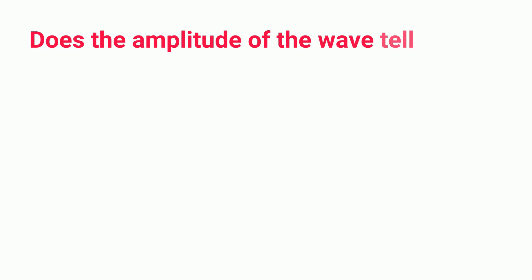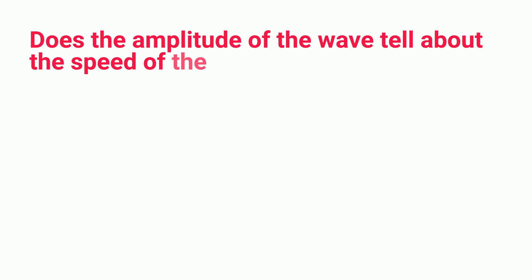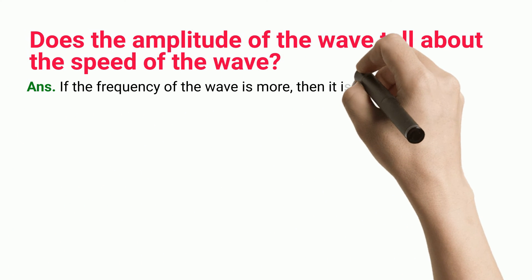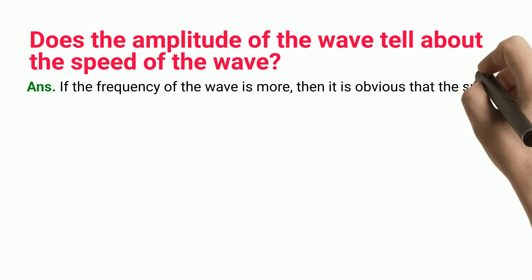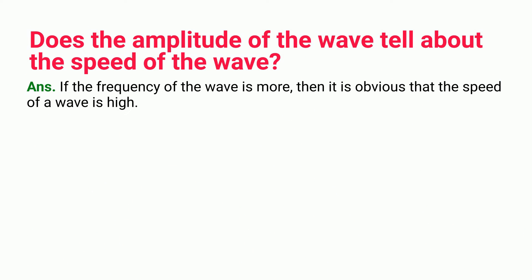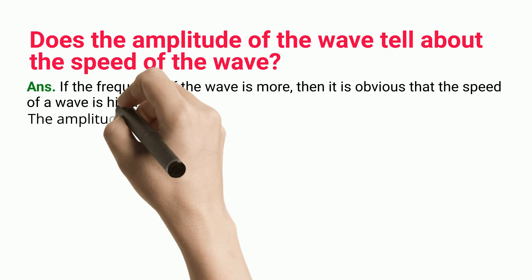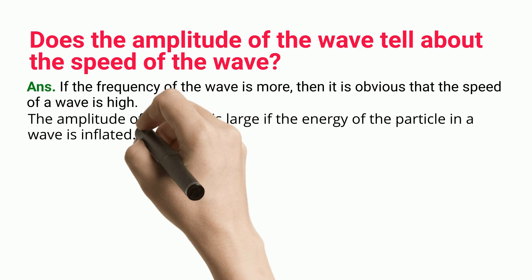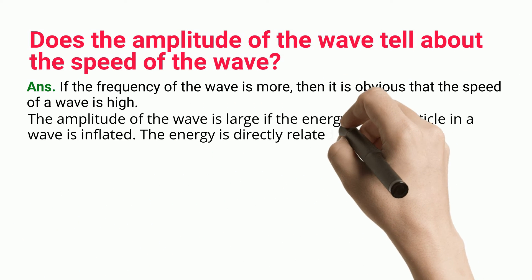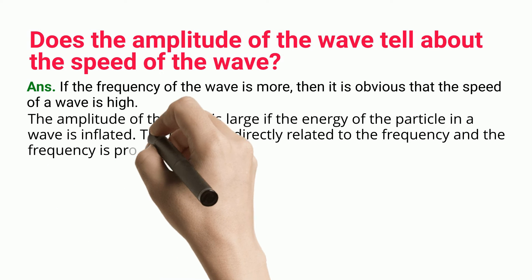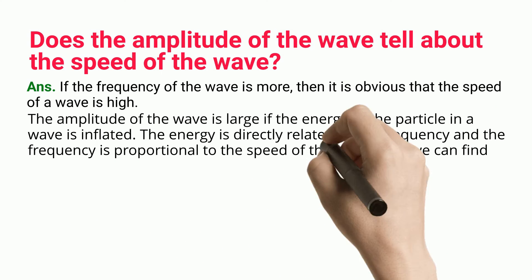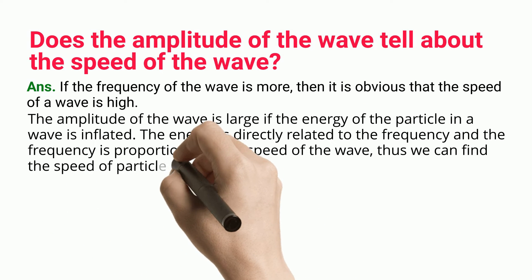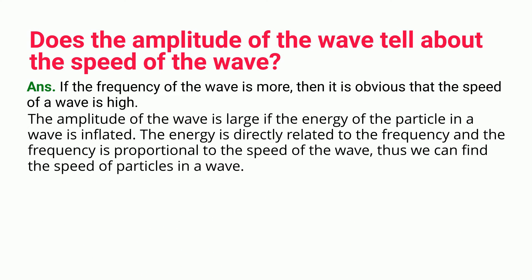Does the amplitude of the wave tell about the speed of the wave? If the frequency of the wave is more, then it is obvious that the speed of the wave is high. The amplitude of the wave is large if the energy of the particle in the wave is inflated. The energy is directly related to the frequency and the frequency is proportional to the speed of the wave, thus we can find the speed of particles in a wave.